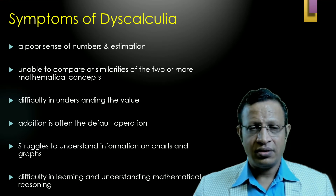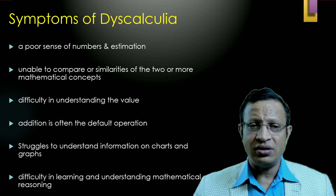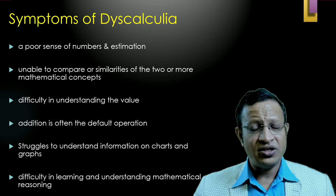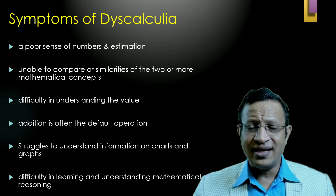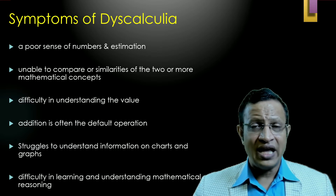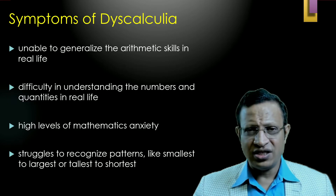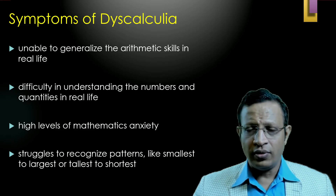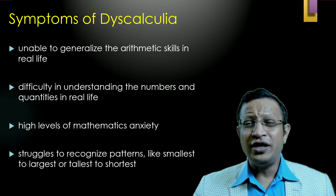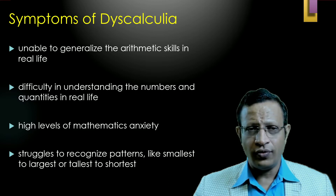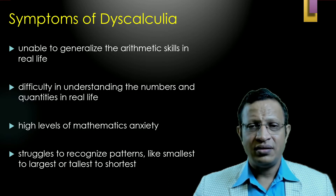Dyscalculia falls into arithmetic difficulties. ICD-11 and DSM-5 has three categories: dyslexia, dysgraphia, and dyscalculia. Specific Learning Disorder is one in which the normal pattern of skills acquisition is disturbed from the early stage of brain development. Dyscalculia is a term referring to a wide range of difficulties with mathematics, including weakness in understanding the meaning of numbers and difficulty in applying mathematical principles to solve problems.